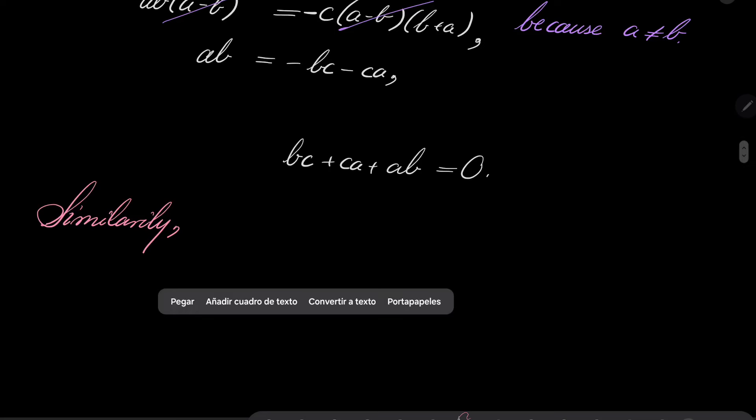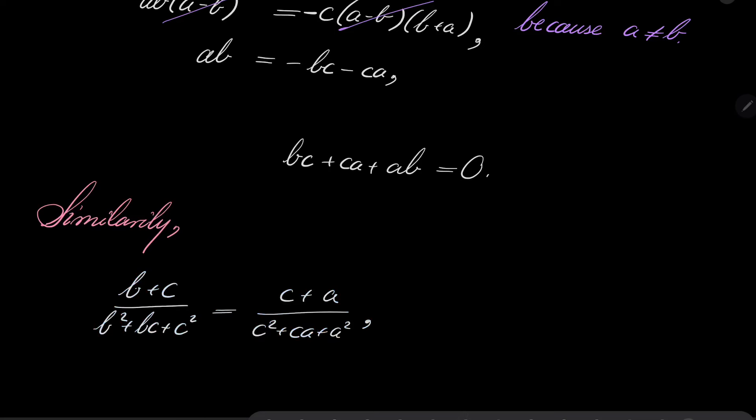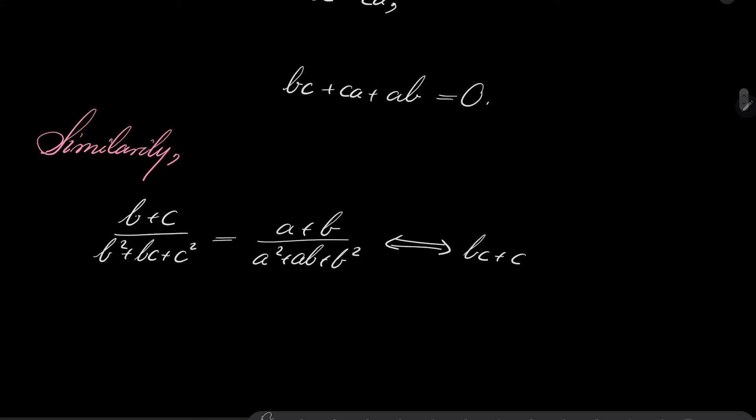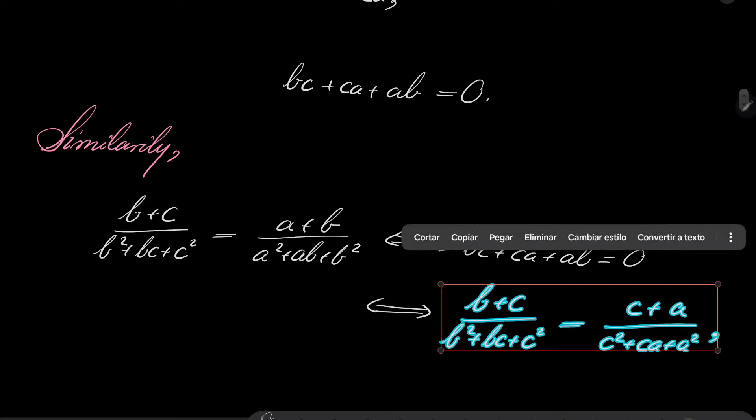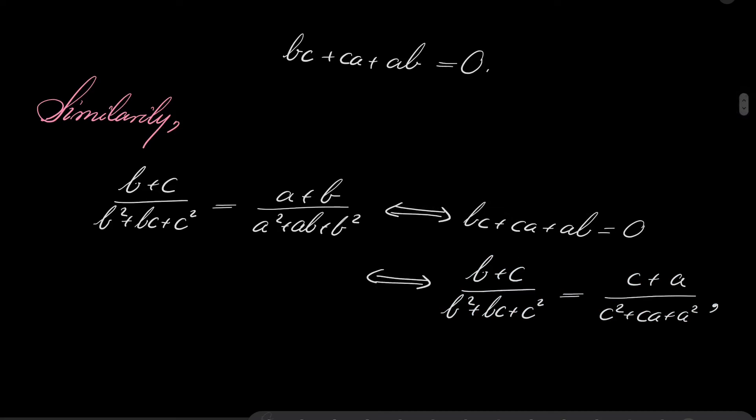Similarly, because of the complete symmetry, if I change the fractions, for example using (c + a)/(c² + ca + a²) = (a + b)/(a² + ab + b²), this is equivalent also to the very same equation: bc + ca + ab = 0. And in turn, this is equivalent once again to the equality of the first two fractions, which closes our problem because this means that if two of the fractions are the same, the third is also the same.